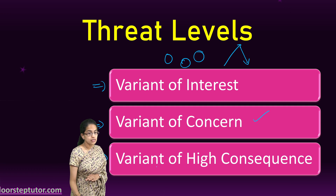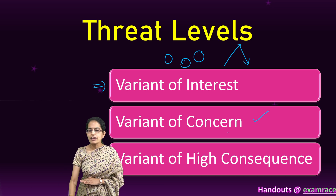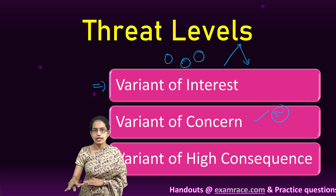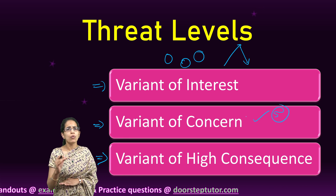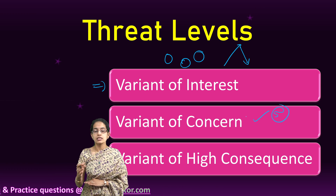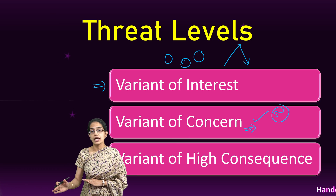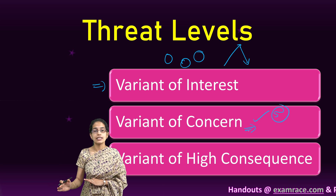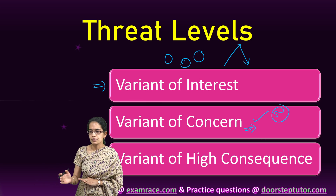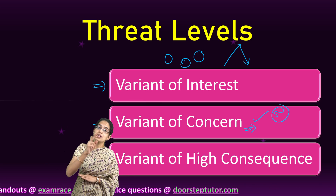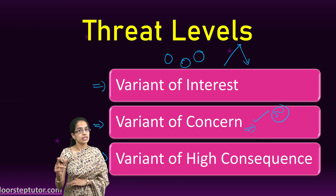The next is the variant of concern. As the name suggests, we are really concerned about it. Five such variants are under study as of now. These are capable of causing more severe disease, can be more contagious, and do not work well with prior antibodies — whether from a prior infection or prior vaccination. A person who had been previously infected by COVID has a probability of getting reinfected by a variant of concern.